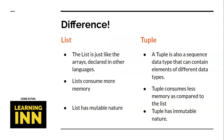Here are the key differences. A list is just like an array — if you have learned C or C#, you will know what an array is. A tuple is also a sequence data type that can contain elements of different data types. A list consumes more memory and is a bit slower, while a tuple consumes less memory. A list has mutable nature and a tuple has immutable nature.